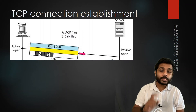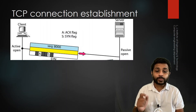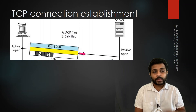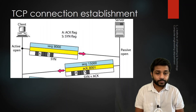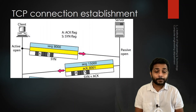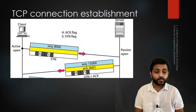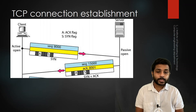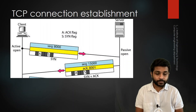When the server receives the SYN packet sent by the client, it can understand that the client wants to create a connection. So the server replies with a SYN+ACK packet. In that packet there is a sequence number of 15000 and an acknowledgement number of 8001. The acknowledgement is always the received sequence number plus 1, so since the client sent sequence number 8000, the server replies with 8001.